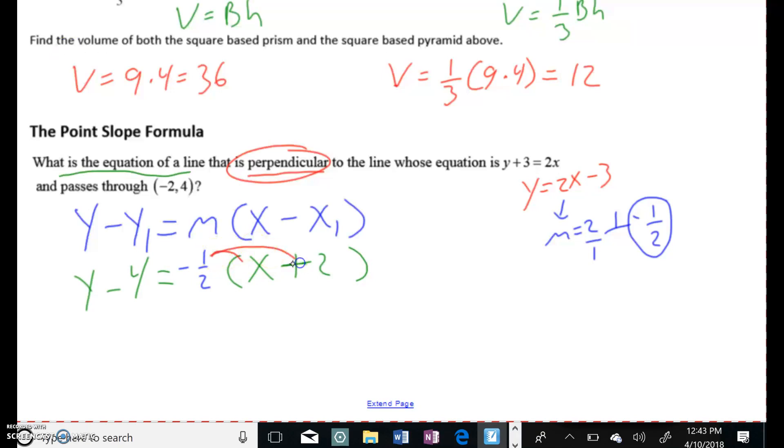And then I just got to distribute that slope in here. So let me distribute that slope. So we end up with Y minus 4 equals negative half times X is negative half X. Negative half times 2 is negative 1. And then the last thing I'm going to do is add 4 to get Y alone for my final answer of Y equals negative 1 half X plus 3. That's it.